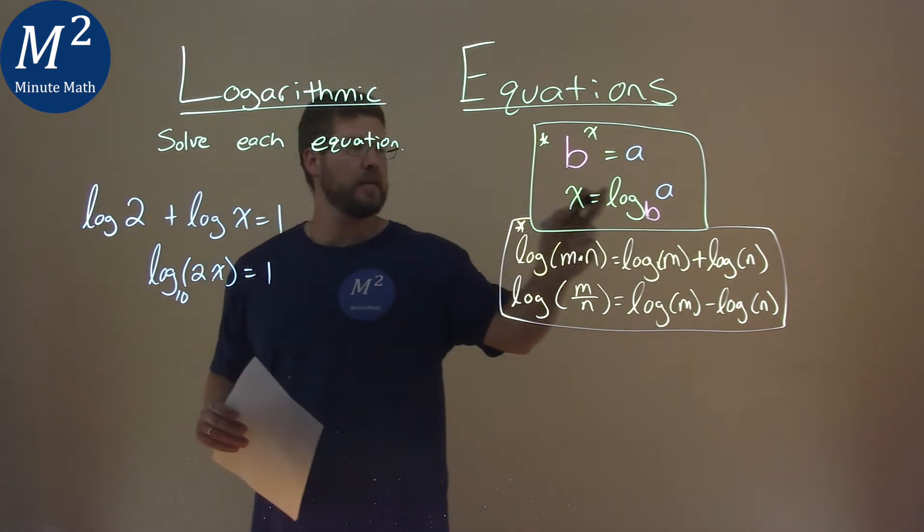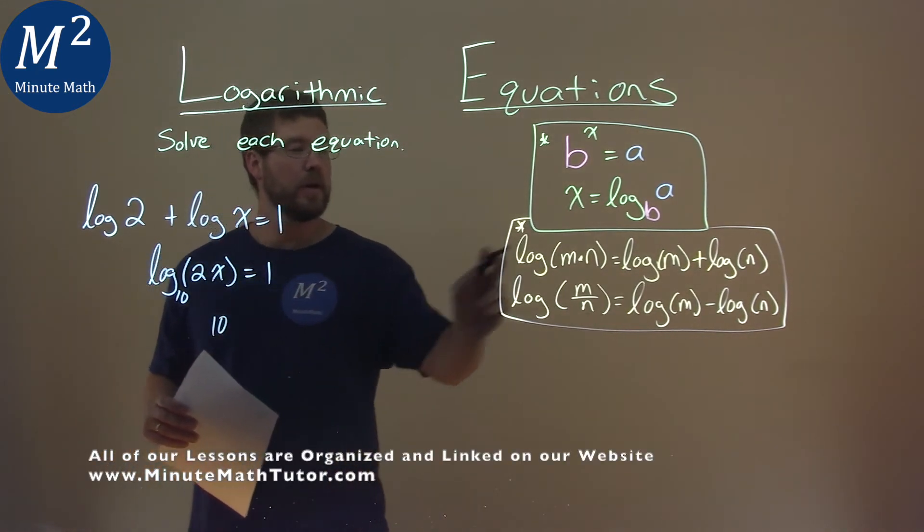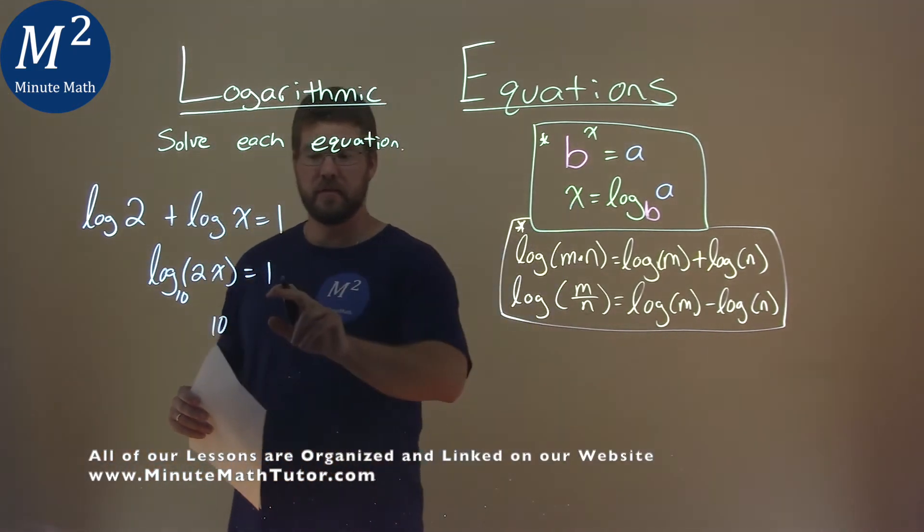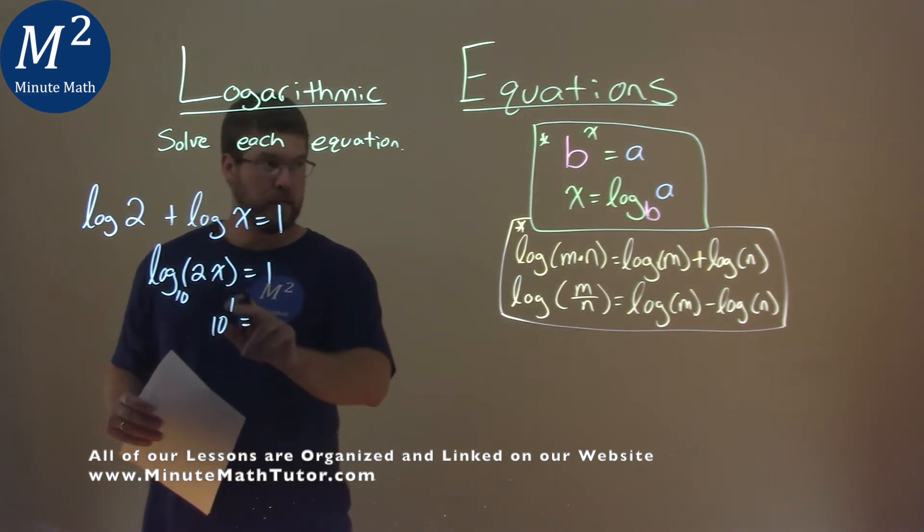So our base is 10, right? So this is equal to 10 to the power of what it's equal to. In this case, it's that 1. Be careful. And now that whole thing is going to be equal to what's inside the logarithm, which is 2x.